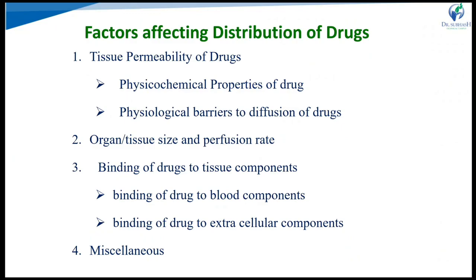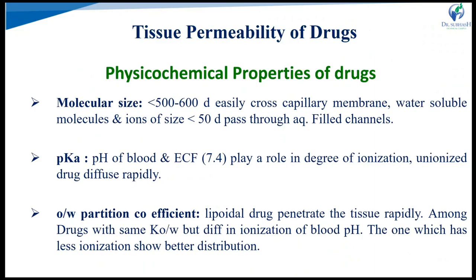The factors affecting drug distribution include: tissue permeability of the drug, which depends on physicochemical properties and physiological barriers to diffusion; organ or tissue size and perfusion rate; binding of drug to tissue components including blood and extracellular components; and other miscellaneous factors. For distribution, similar to absorption, the drug should be unionized, lipid soluble, and of low molecular weight. Protein-bound drug does not go for distribution.